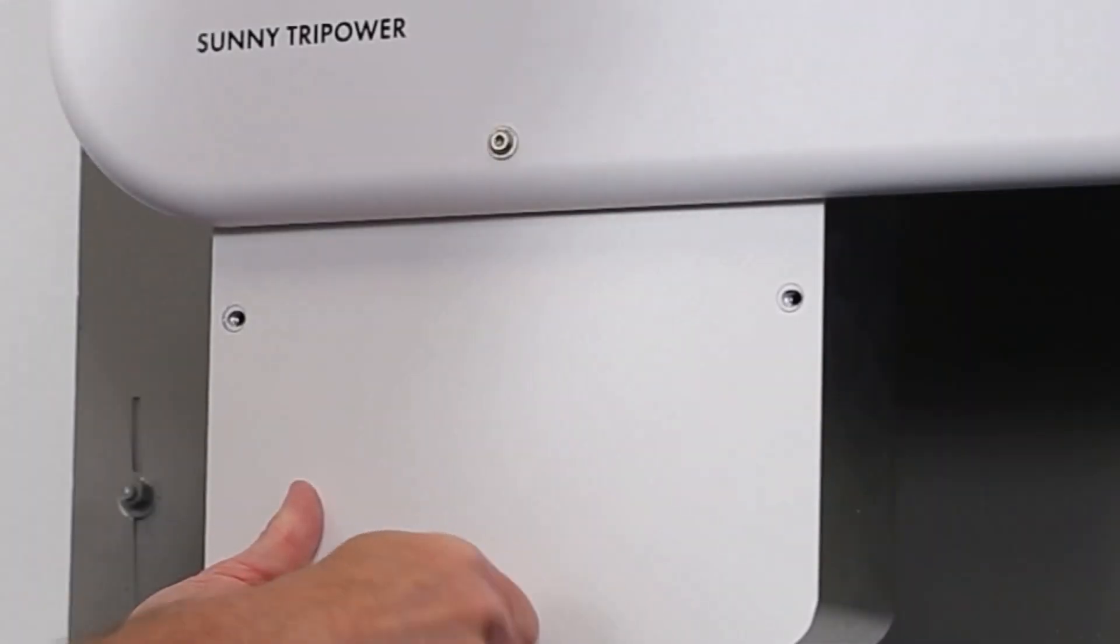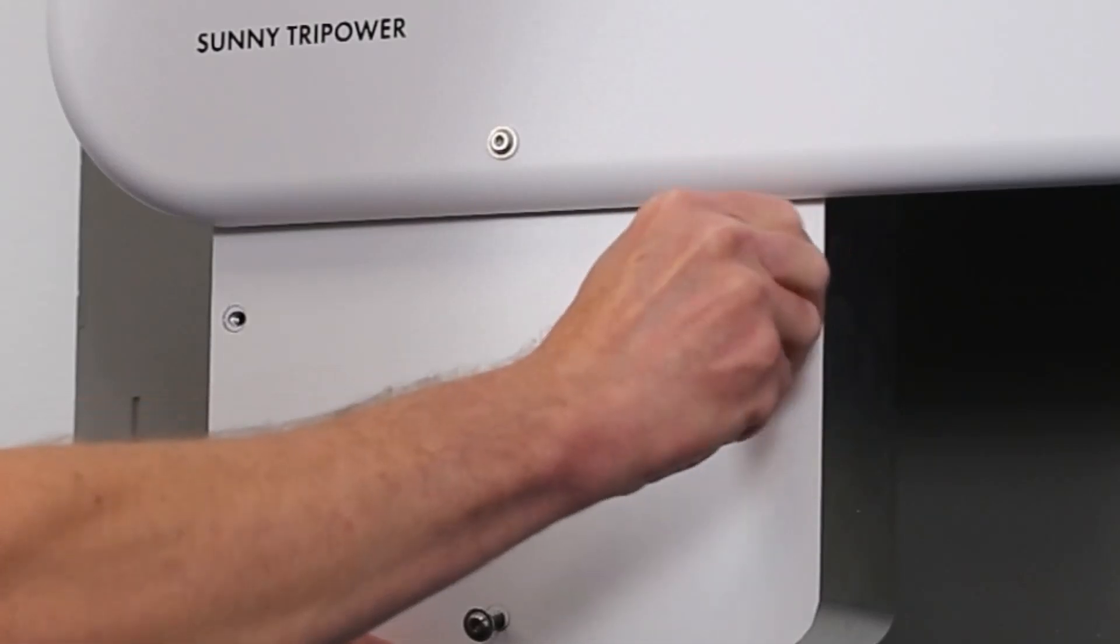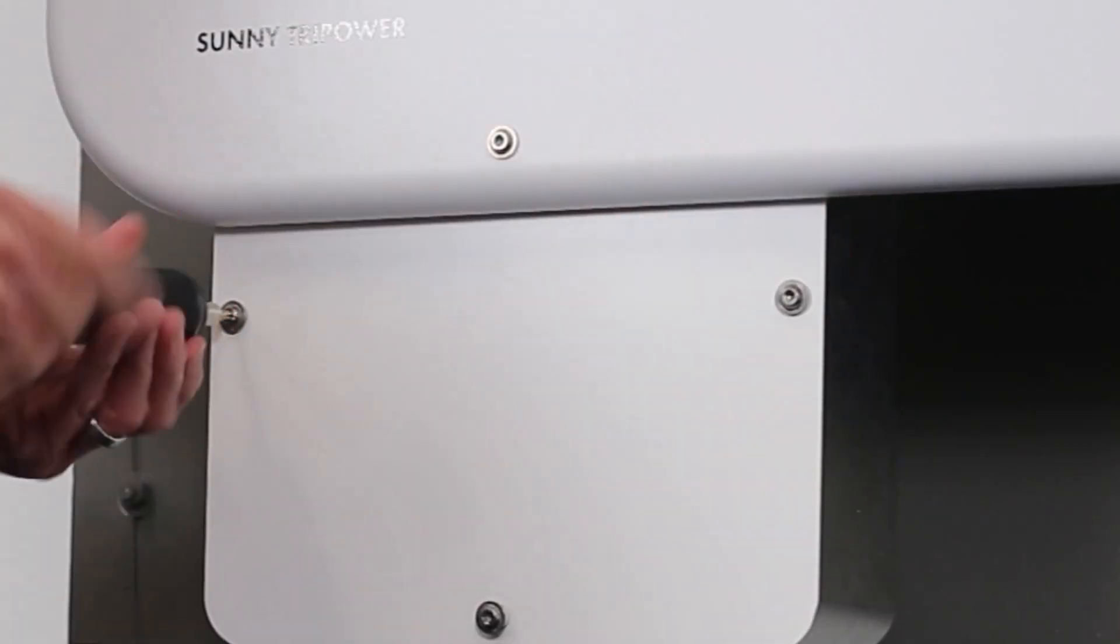If you have the DC terminal cover accessory, place the lid back on and attach it using the three lid bolts using a torque spec of 35 inch pound.